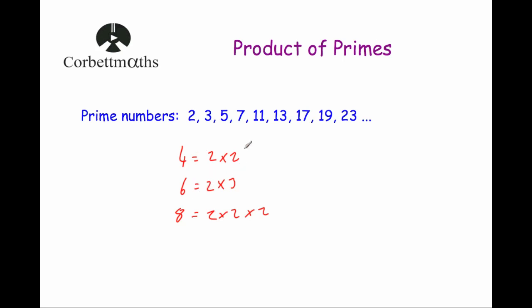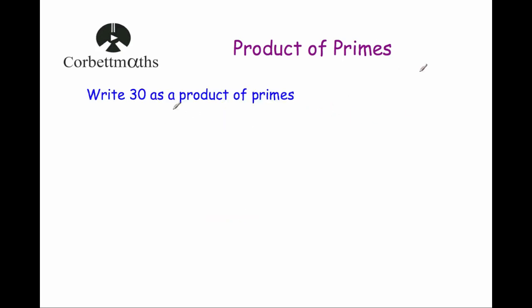Writing numbers as a product of primes is really useful for things like finding the lowest common multiple and highest common factor — there are videos on that on Corbettmaths. But in this video we're going to focus on just how to write numbers as a product of their primes. Let's look at the number 30.